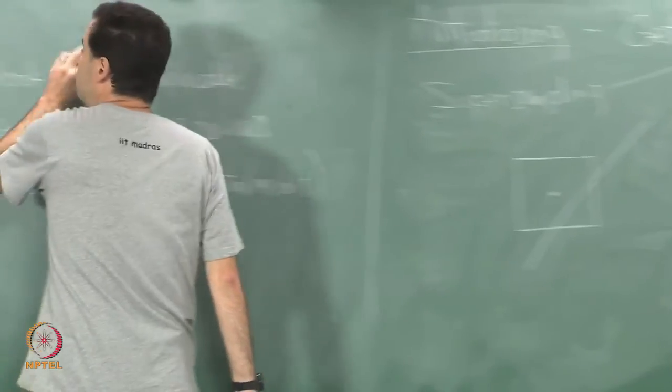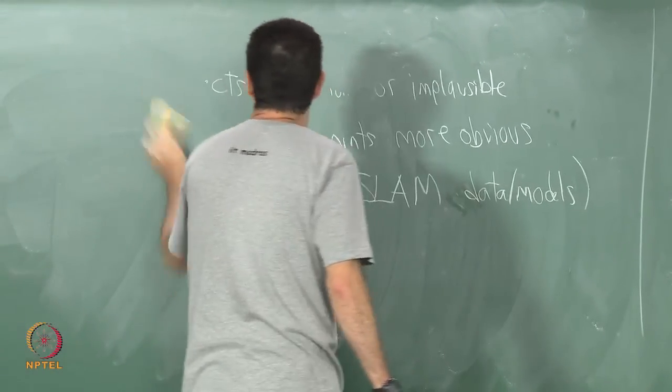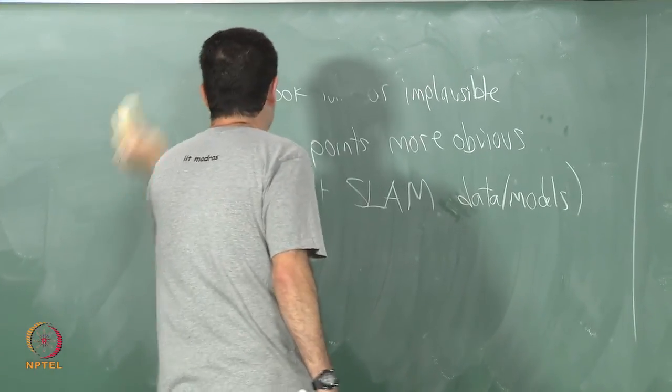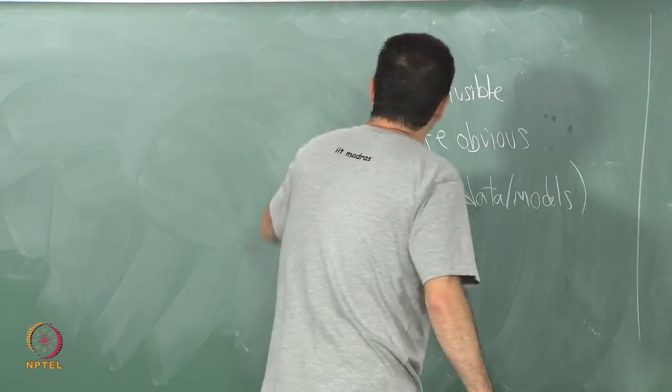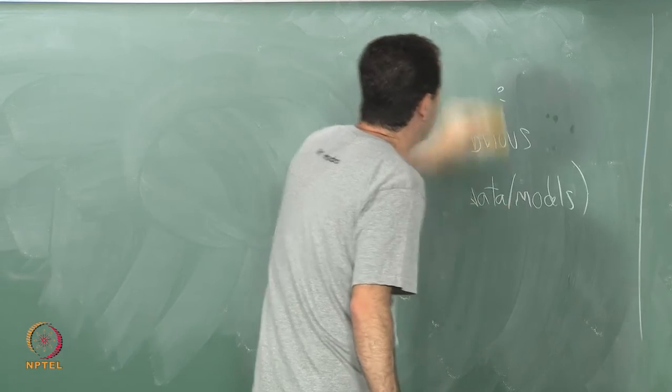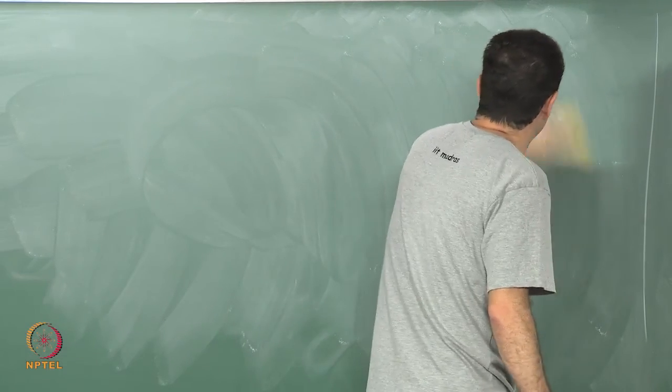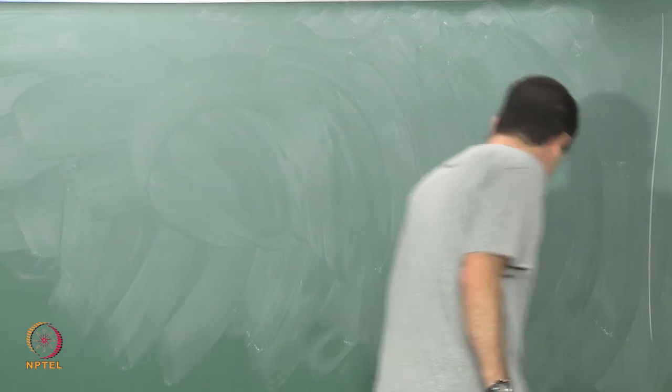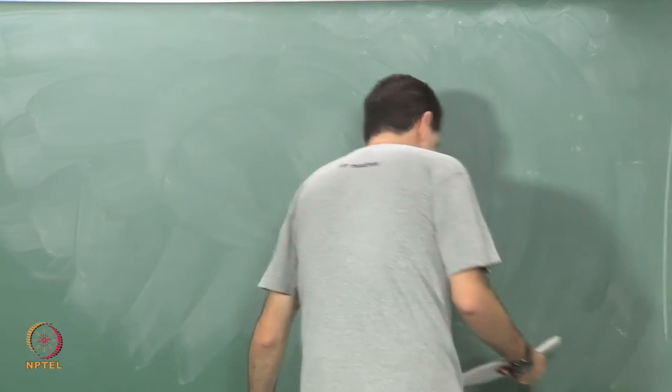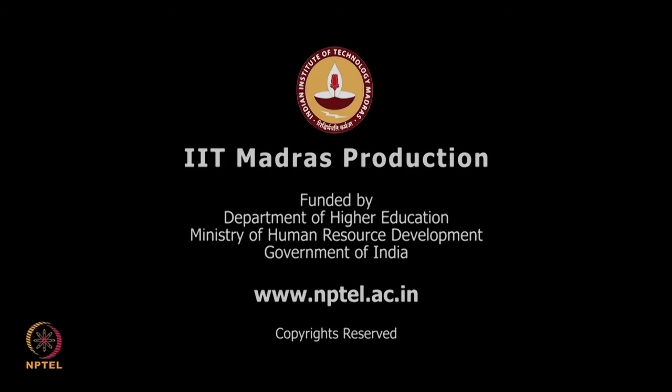Aliasing problems are handled with super sampling or MSAA, but super sampling comes at great expense, and MSAA is a kind of trade-off that gives some of the benefits at lower cost. The next problem is handling distortion — specifically the distortion due to spherical lens aberrations.